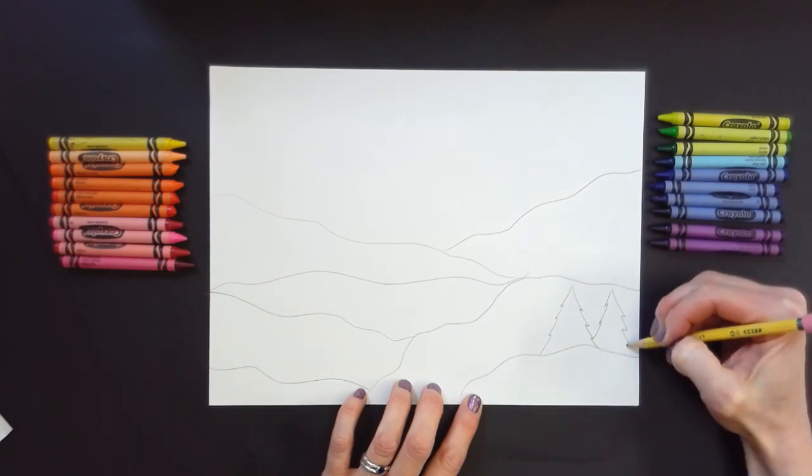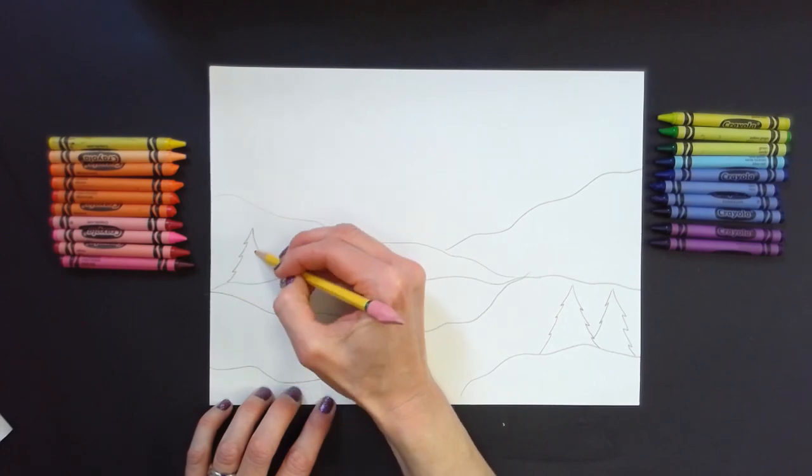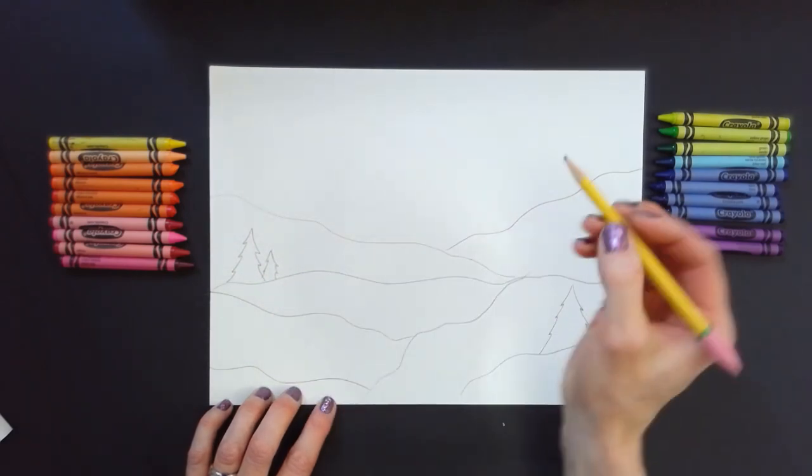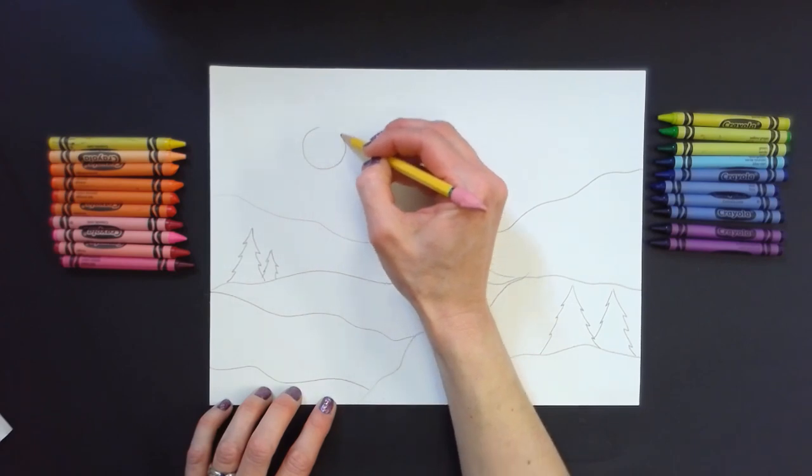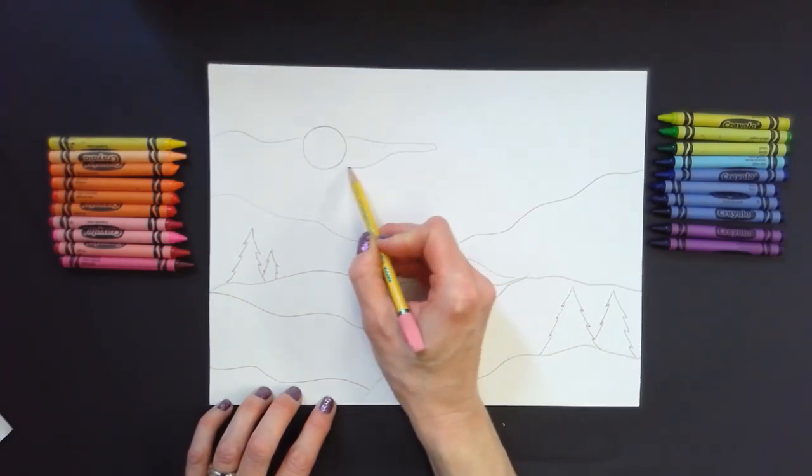Continue adding lines to represent layers of the ground. Draw gently rolling hills or snow drifts near the bottom of the paper. Draw icebergs, mountains, or a body of water in the middle of the paper. Draw taller mountains in the distance.